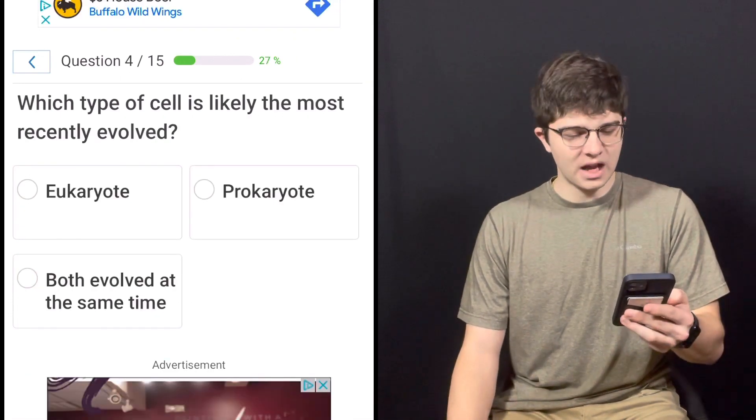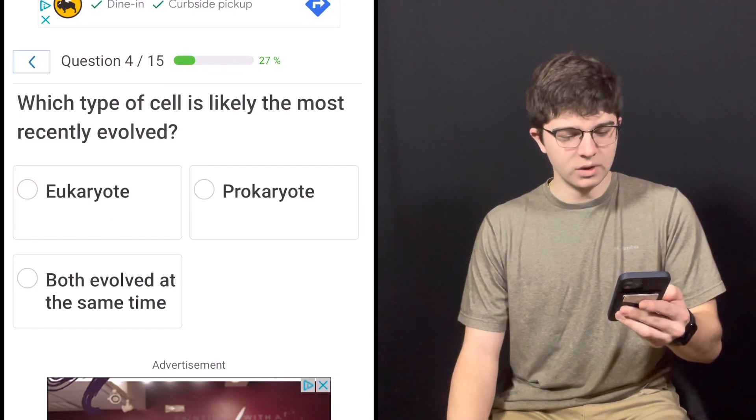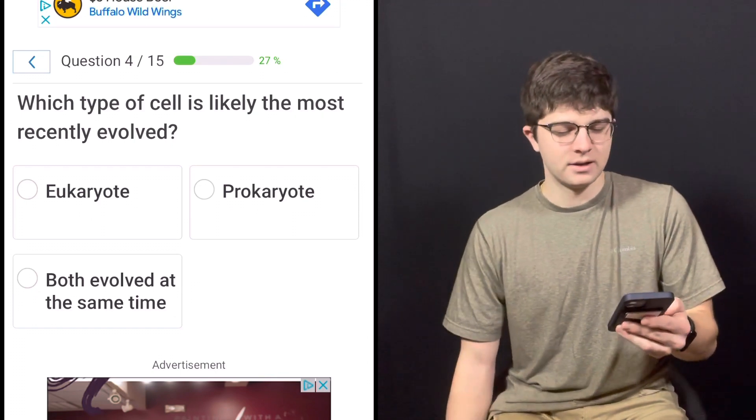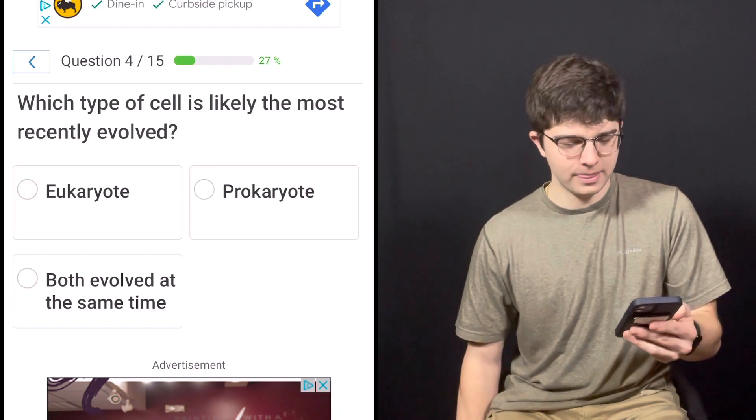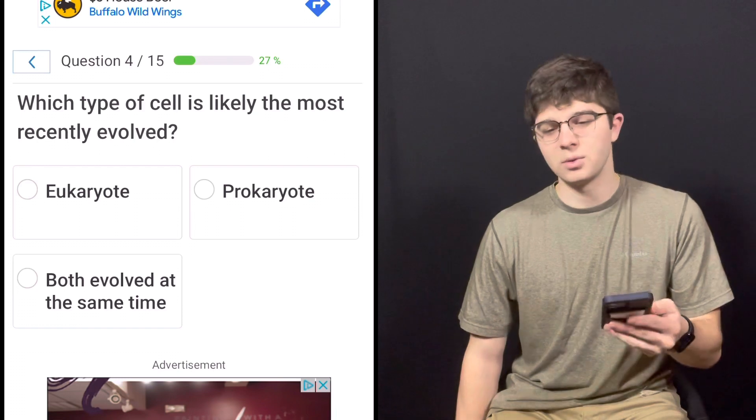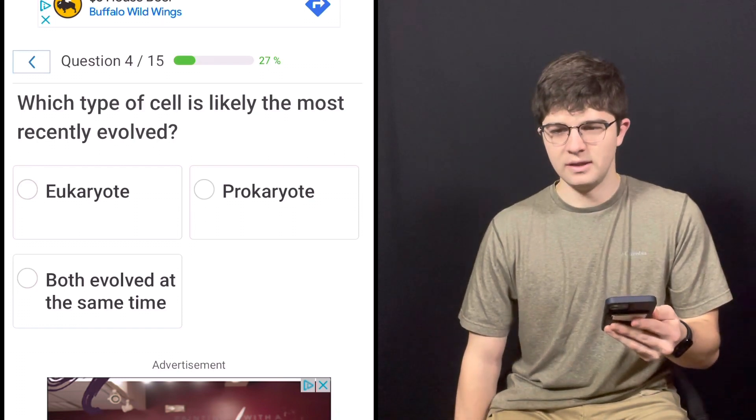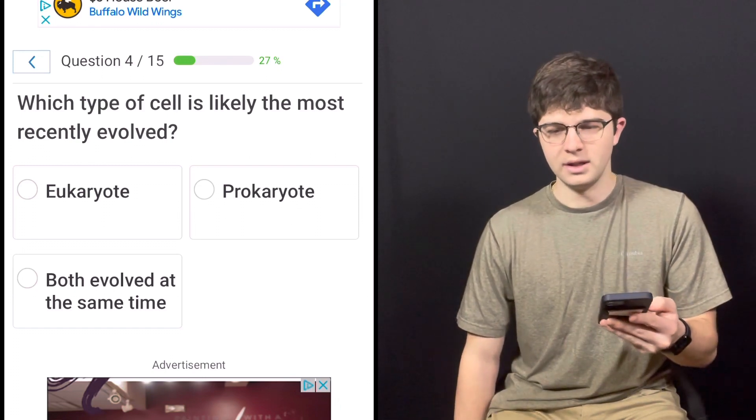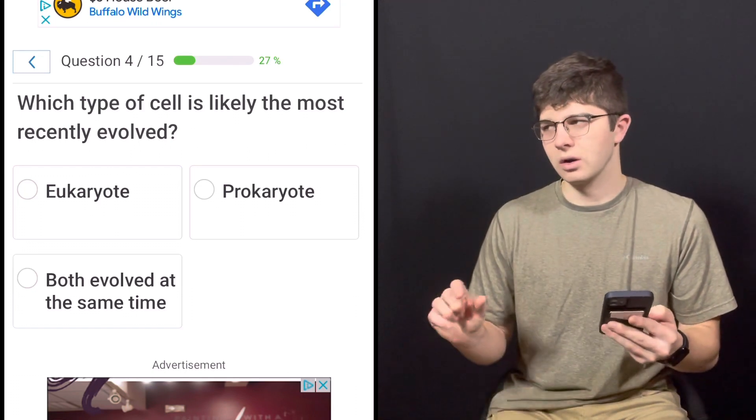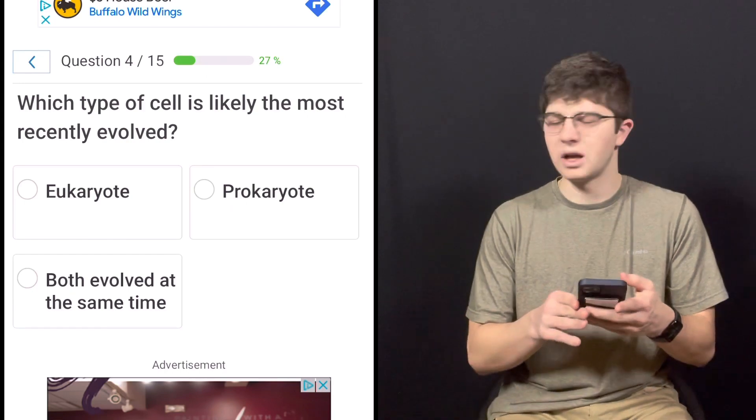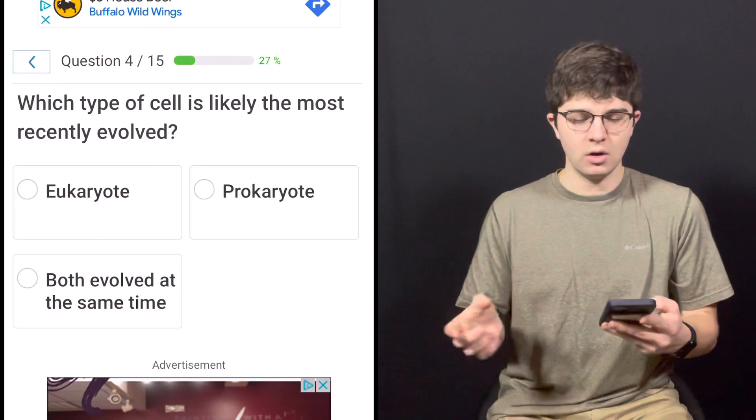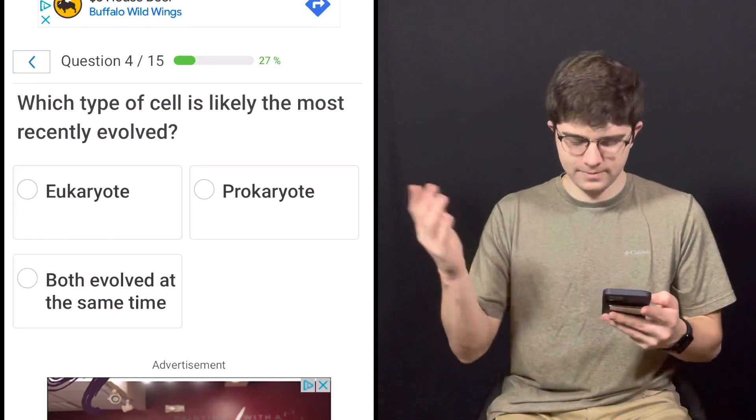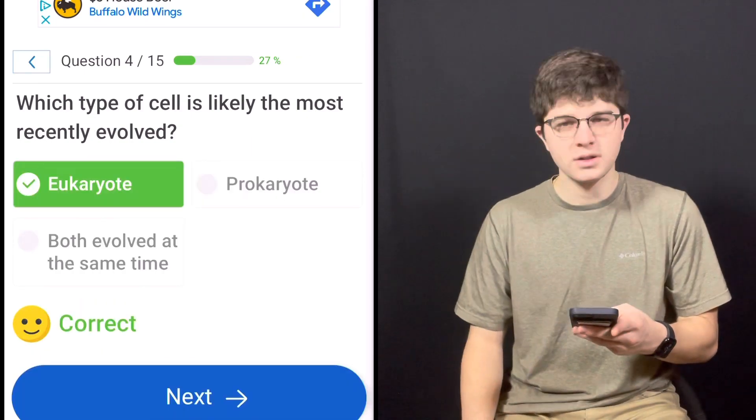Question number four. What type of cell is likely the most recently evolved? Is it a eukaryote, a prokaryote, or both evolved at the same time? This is a weird question. I'm going to go with eukaryote because bacteria were definitely your first, and then they turned into archaea when they started living in crazy places, sometimes called extremophiles, and then they kind of evolved into the more sophisticated eukaryotic cell. Not saying that bacteria are simple beings at all, but with compartmentalization and there's a bunch of different theories on how we got mitochondria. Symbiosis. Yeah. So I'm going to go with eukaryote. That's correct.